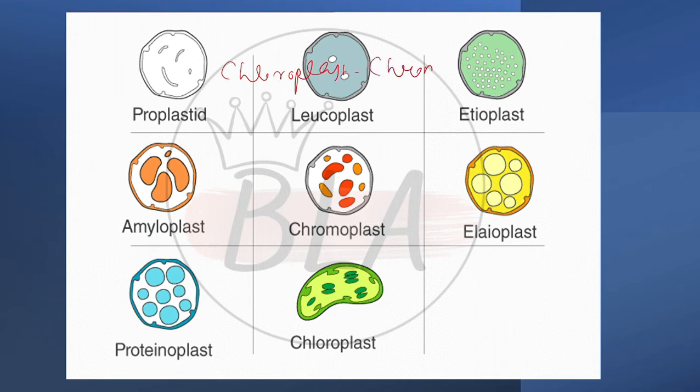This diagram is given here showing different types of plastids - we are going to talk about types such as proplastid, amyloplast, chromoplast, leucoplast and different types. But here we are going to focus on chromoplast and chloroplast difference.